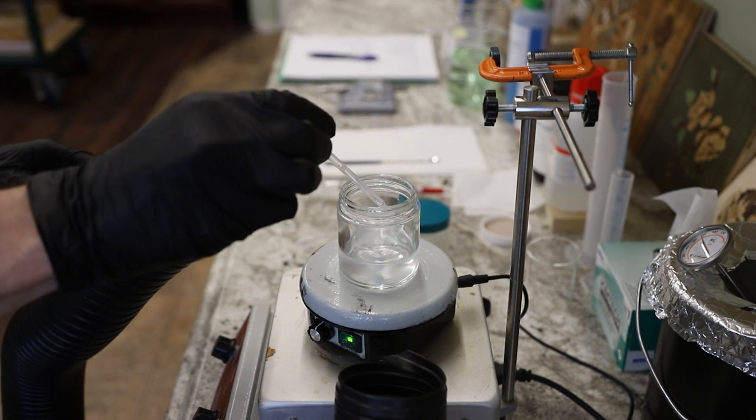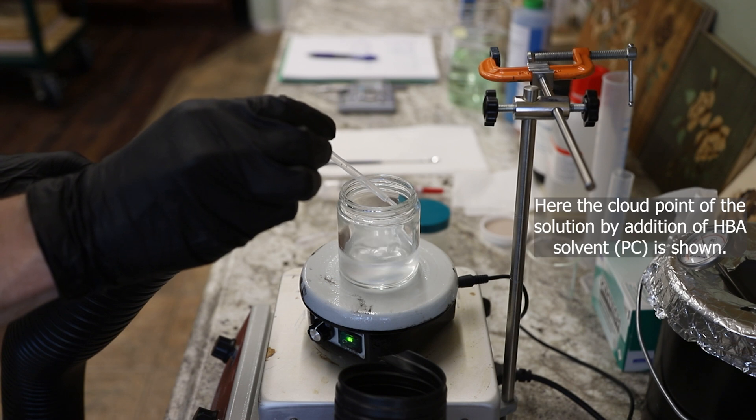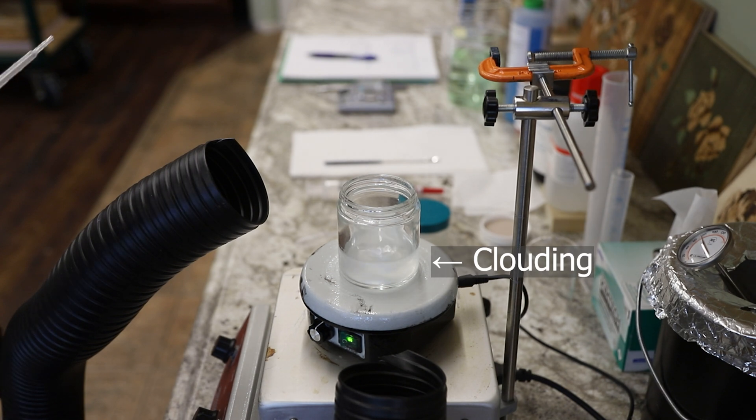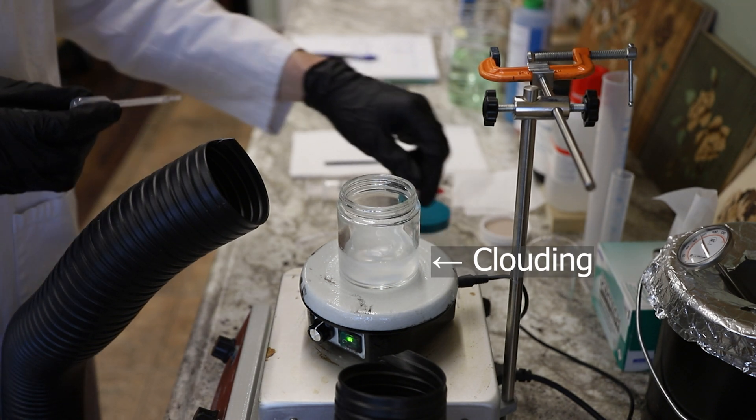So I've added, at this point, a little bit over 17 percent, because I'm going to demonstrate the cloud point. So here I'm adding slightly more, going up to about 18 or 19 percent propylene carbonate, and you can see that the solution is becoming opaque. This is the solution clouding.